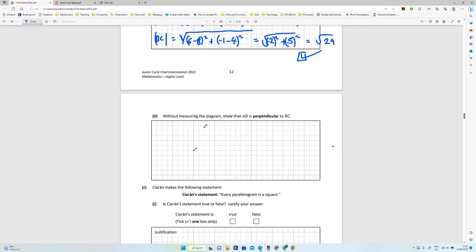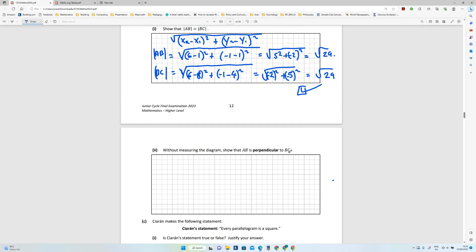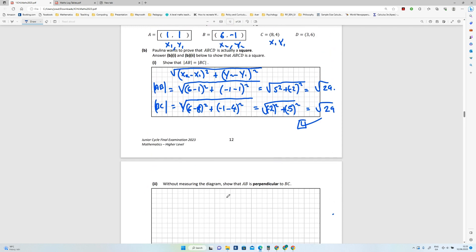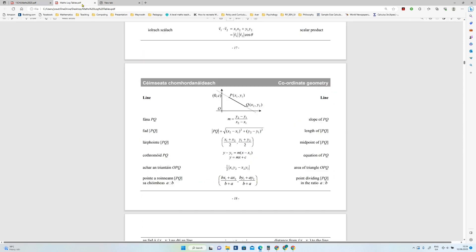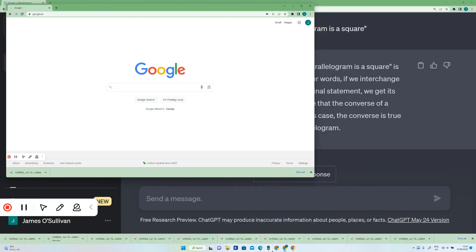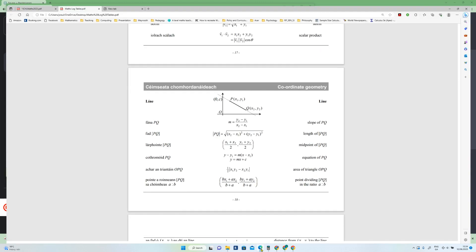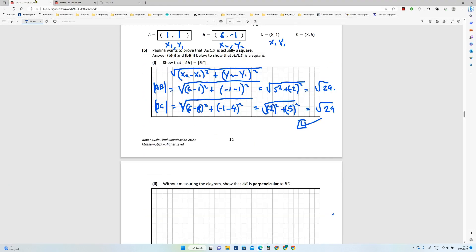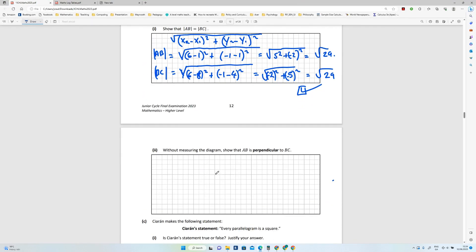The second part: without measuring the diagram, show that AB is perpendicular to BC. So we need to get the slope of both of those lines to see if they're perpendicular. Okay, again the log tables has the slope formula. So m is equal to (y2 - y1) over (x2 - x1).